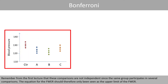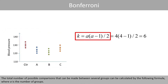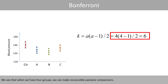Remember from the first lecture that these comparisons are not independent since the same group participates in several comparisons. The equation for the family-wise error rate should therefore only be seen as the upper limit of the family-wise error rate. The total number of possible comparisons between several groups can be calculated by the following formula, where k is the number of groups. We see that when we have four groups, we can make six possible pairwise comparisons.